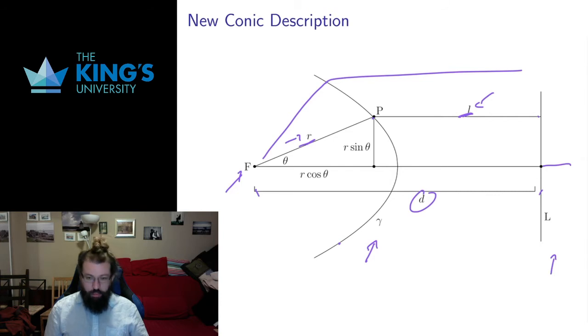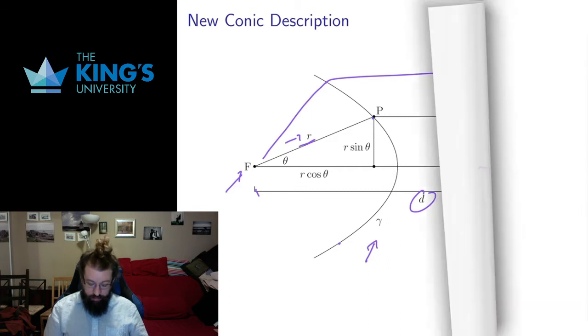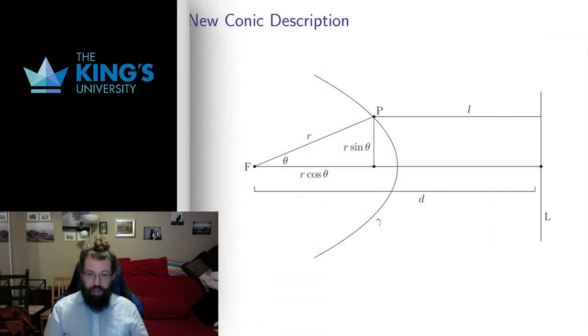Alright, so what I want to do is I want to take this description of the parabola as distance to a focus and distance to directrix. And I want to adjust it. In the parabola, the distances have to be the same. I'm going to define a new quantity called eccentricity. I'm going to write it as E. And it's going to be the ratio of those two distances. And I'm now going to let that be different from one.